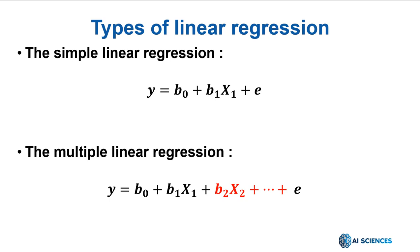Okay, we have two types of linear regression: the simple linear regression and the multiple linear regression. In simple linear regression, we use a single independent variable to predict the value of a dependent variable. The model, in this case, will be y equals b0 plus b1x1 plus e.